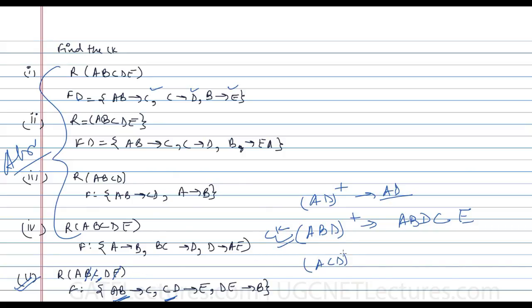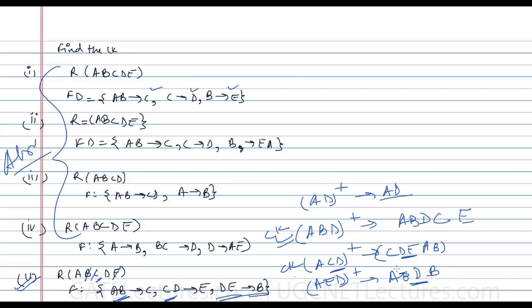Adding C instead: ACD closure — with CD we identify E, and with DE we identify B, so ACD is also a candidate key. Adding E: AED closure — with DE we identify B, with AB we identify C, so AED is also a candidate key. Therefore there are three candidate keys for this relation: ABD, ACD, and AED. The set of candidate keys is always smaller than the set of super keys. This much is enough to understand how many candidate keys are possible.